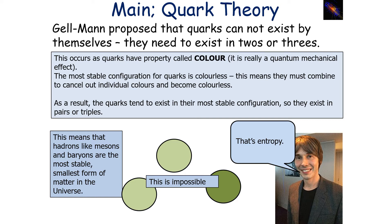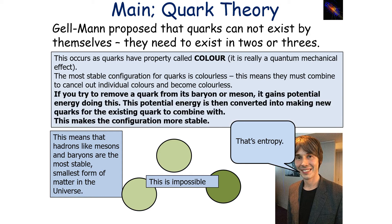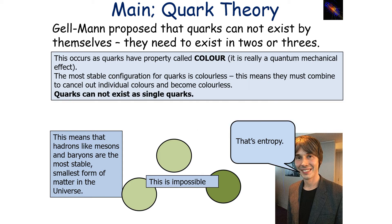Colour is not really colour — it's just a quantum mechanical effect. The most stable configuration for quarks is being colourless, meaning they combine and cancel out individual colours. As a result, quarks tend to exist in their most stable configuration, which is either pairs or triplets. If you try to remove a quark from its baryon or meson, it gains potential energy, which is then converted immediately into making new quarks for the existing quarks to combine with. Quarks cannot exist as single quarks — this is called quark confinement.